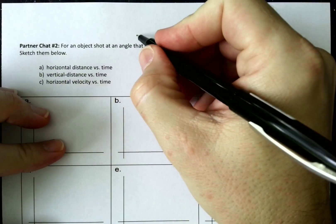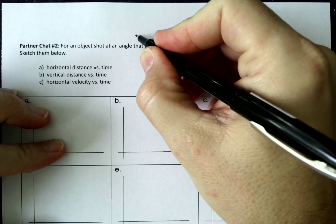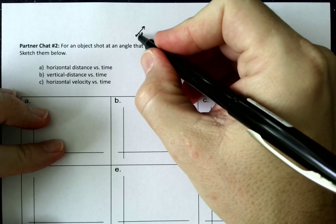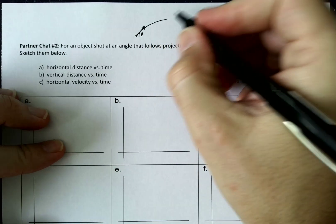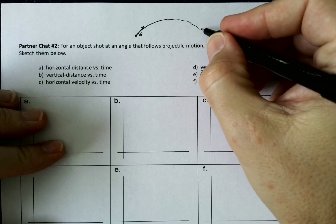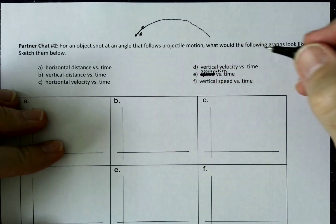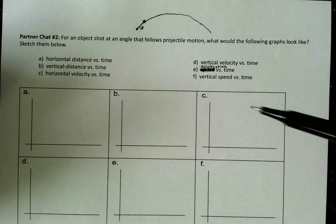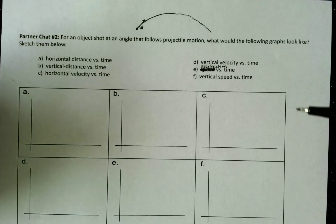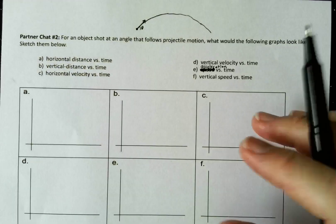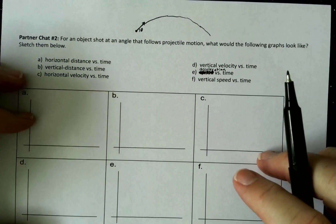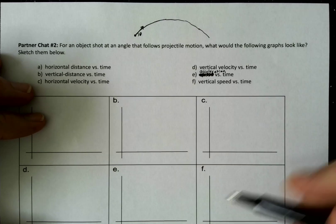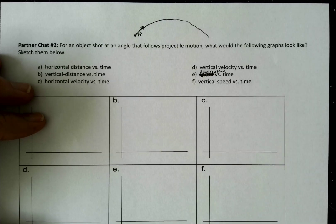Alright, so what we're going to be looking at is an object that has been shot at an angle and is undergoing projectile motion, something like this, and returning back to the ground about the same height that it came from. We're going to be looking at various graphs associated with this. You can do these in any order. I suggest that you try it first. Once you've tried it, then you can go ahead and watch my explanation for each of these.